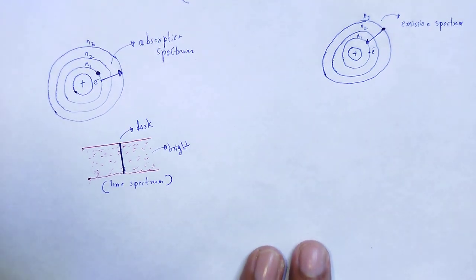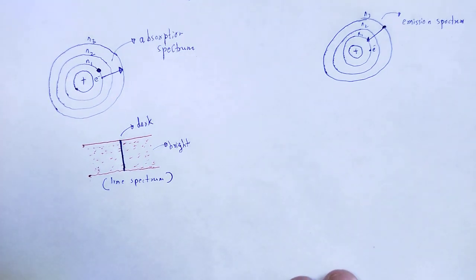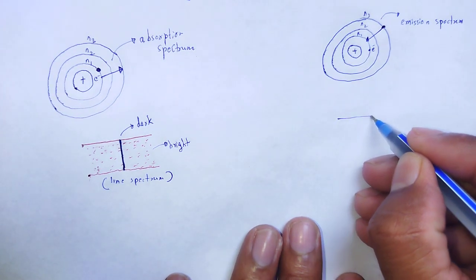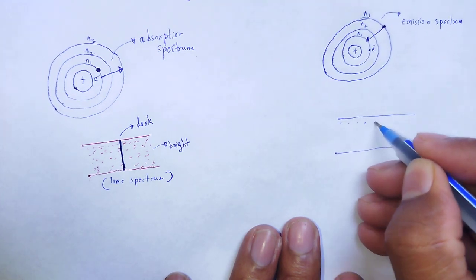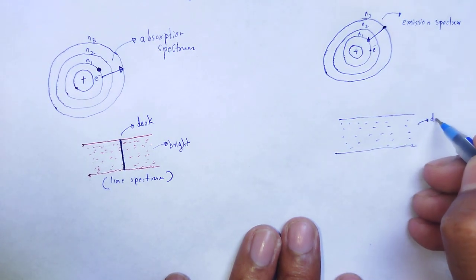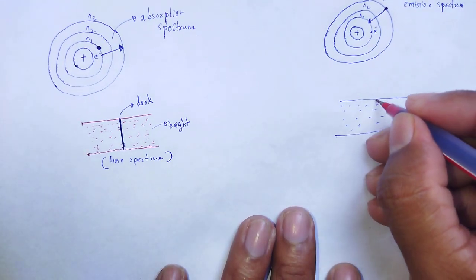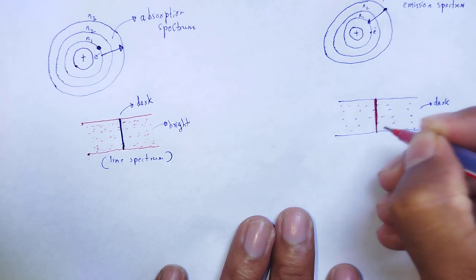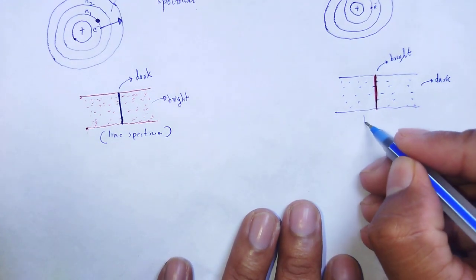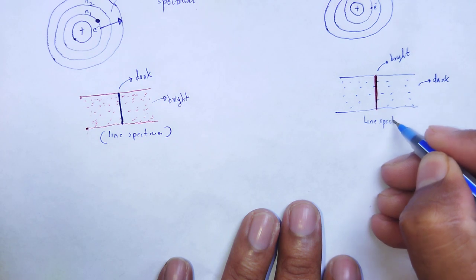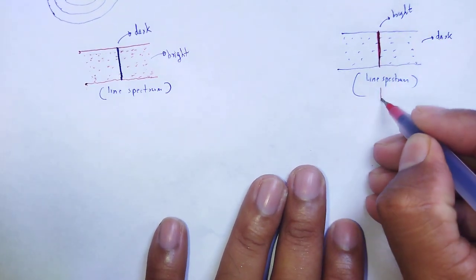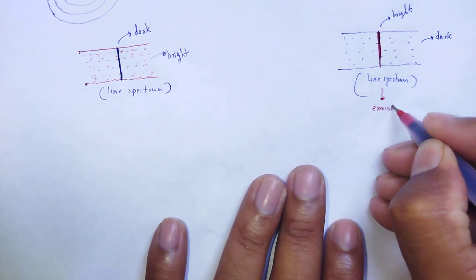In the emission spectrum we notice that in the dark segment we notice a bright spot. In that dark segment — this is dark — here we notice a bright line. That bright line is the line spectrum, and that line spectrum is nothing but emission spectrum. It is noticed when that electron loses energy, so the electron passes from higher to lower energy level, meaning energy is released, and the spectral line of specific wavelength is emitted, and this line constitutes the emission spectrum.